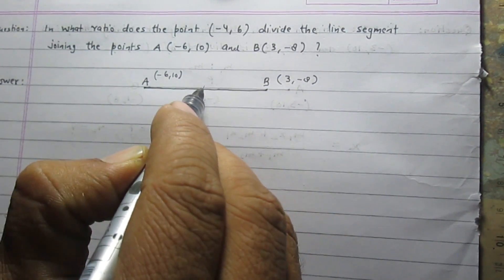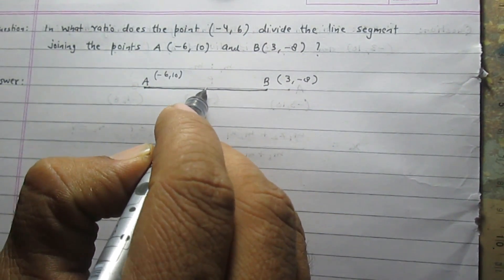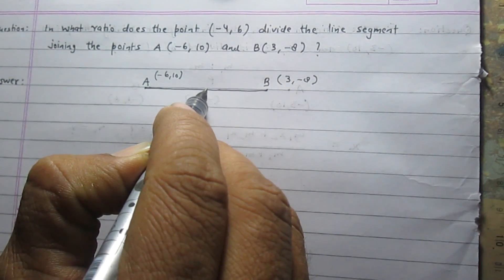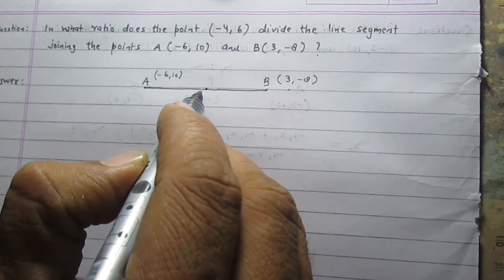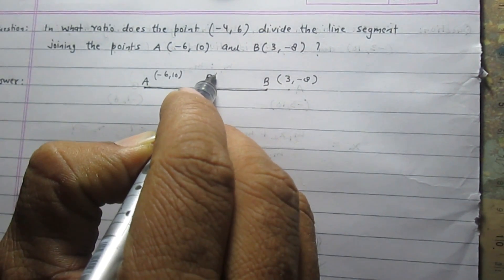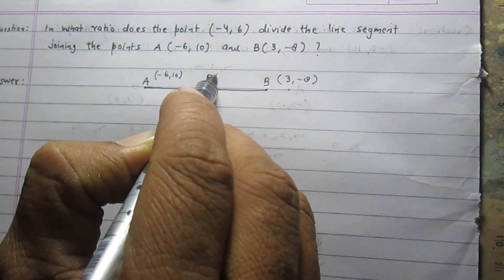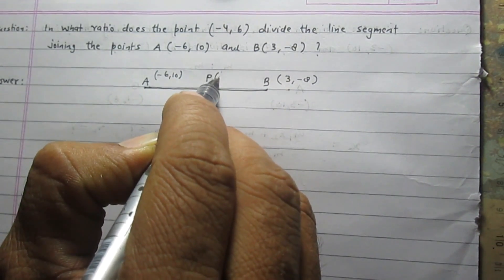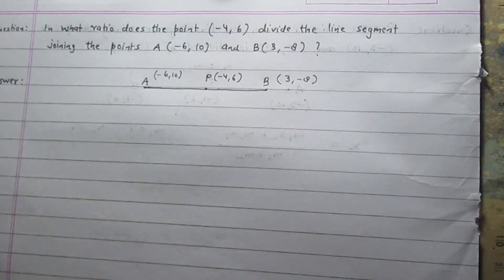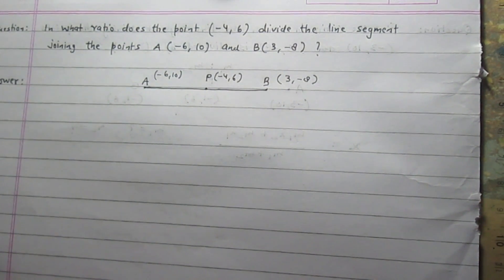There is a third point which is lying on the line segment AB. Let us assume that this point is point P. The coordinates of point P are given and they are minus 4 and 6. We are given that this point P is dividing the line segment in some ratio, and we are to find this ratio.